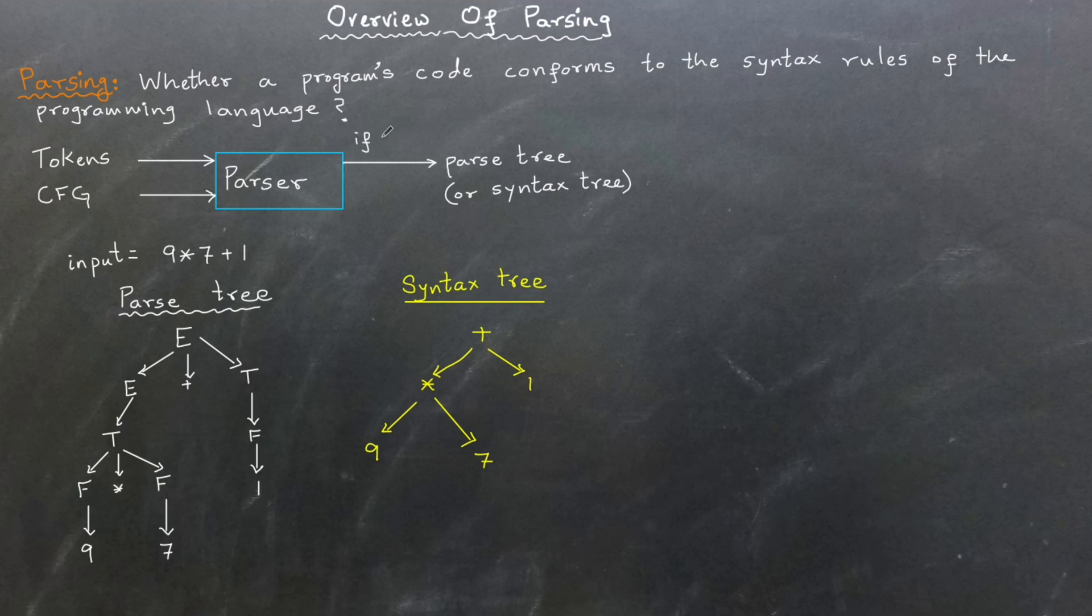What happens if parsing fails? In such cases, the parser does not produce a tree. Instead, it generates a list of syntax errors such as missing semicolons, unbalanced parentheses, or mismatched keywords.